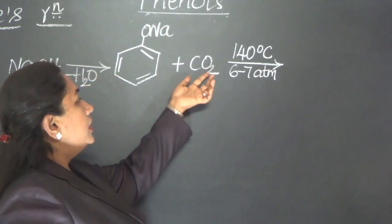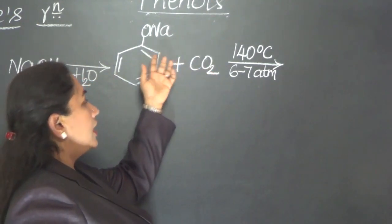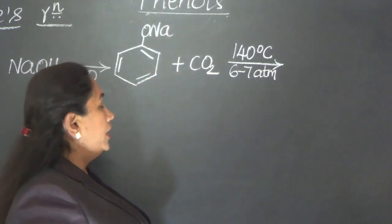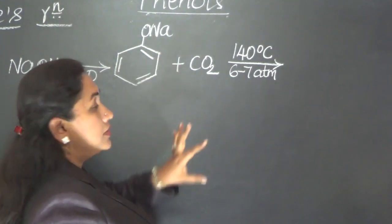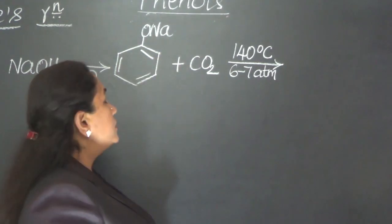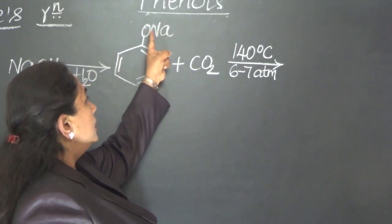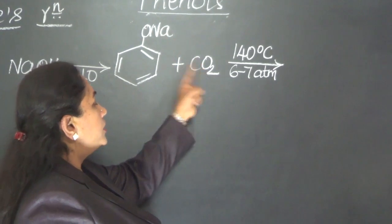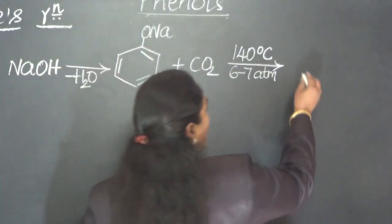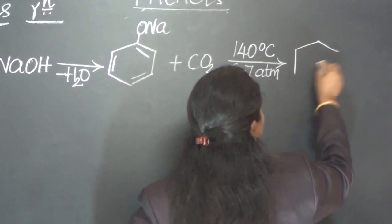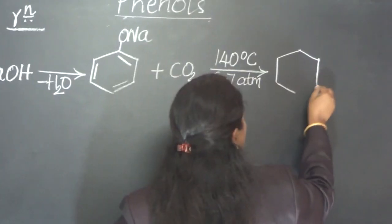What happens? This COO will take attachment with the benzene ring. Actually, there is a rearrangement in the structure. Hydrogen from here will move to this place, and Na will attach with this COO. Then we land up in the formation of a structure like this.